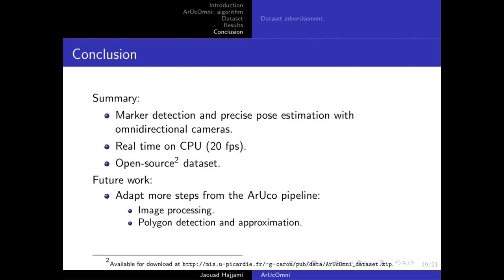In this paper, we proposed an adaptation of ArUco for marker detection in omnidirectional images that we call ArUco Omni. It runs in real-time at 20 frames per second on high-resolution images. We also shared a dataset of panoramic images of ArUco markers.